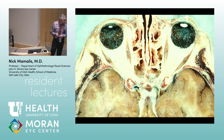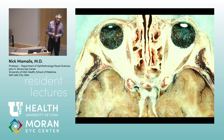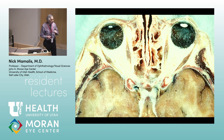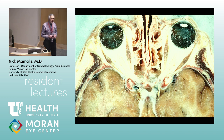What's the most important thing that lives in the intraconal space? The optic nerve. Anything else? The ophthalmic artery runs through there, all the branches of the ophthalmic artery run through there, the vein runs through there, the optic nerve, and a lot of fat.